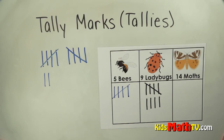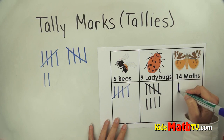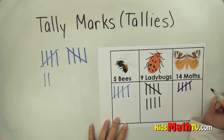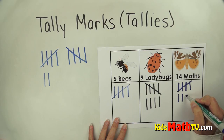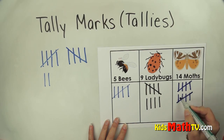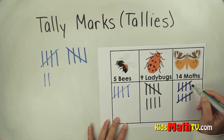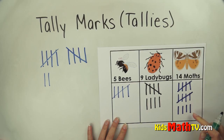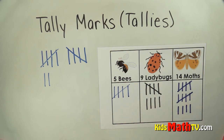How about these moths? Fourteen moths — that's a lot. One, two, three, four — five is a cross. I keep counting: six, seven, eight, nine, ten is a cross. That's five more: one, two, three, four, five. So now I'm at five, ten, eleven, twelve, thirteen, fourteen. Five, ten, and four more is fourteen. So that's how you would tally each of those numbers of bugs. And that's the end of our lesson on tally marks.